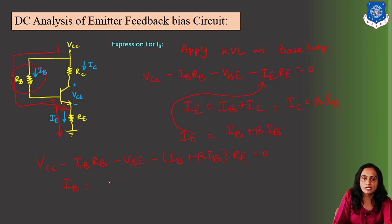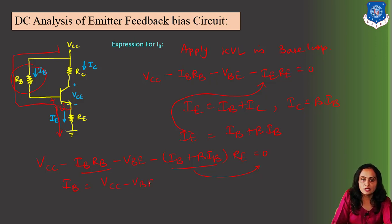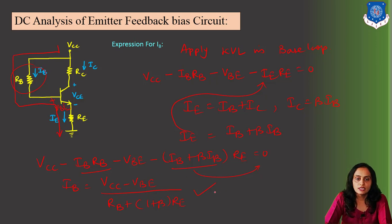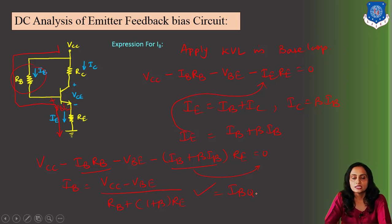Now we will make IB the subject. Moving the IB terms to the right-hand side, and rearranging, we get: IB = (VCC − VBE) / (RB + (1 + β)·RE). This is the equation for the base current, written as IBQ — the quiescent value of the base current.